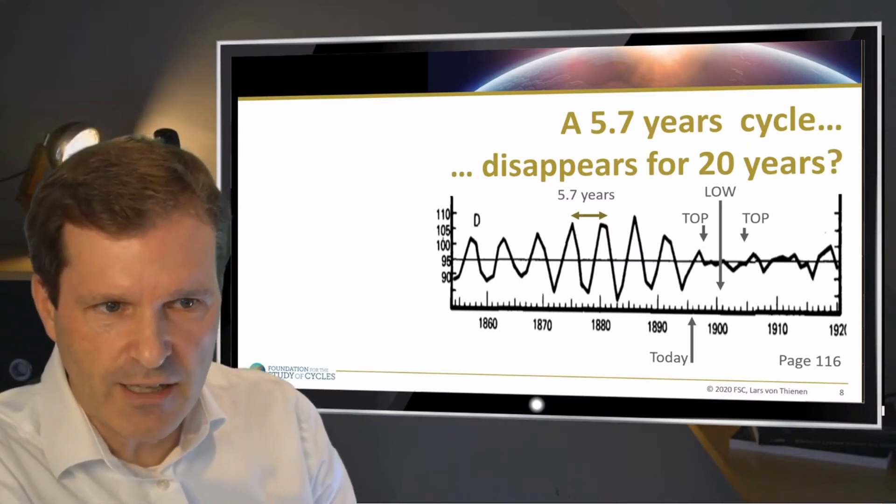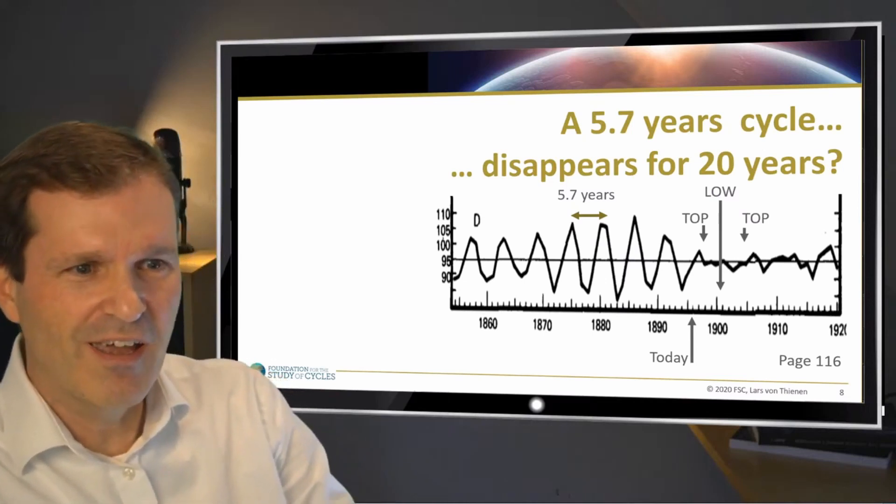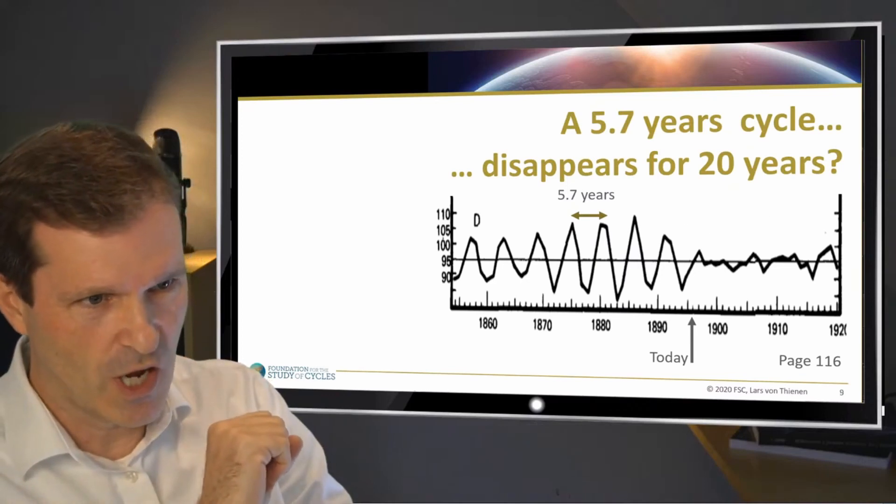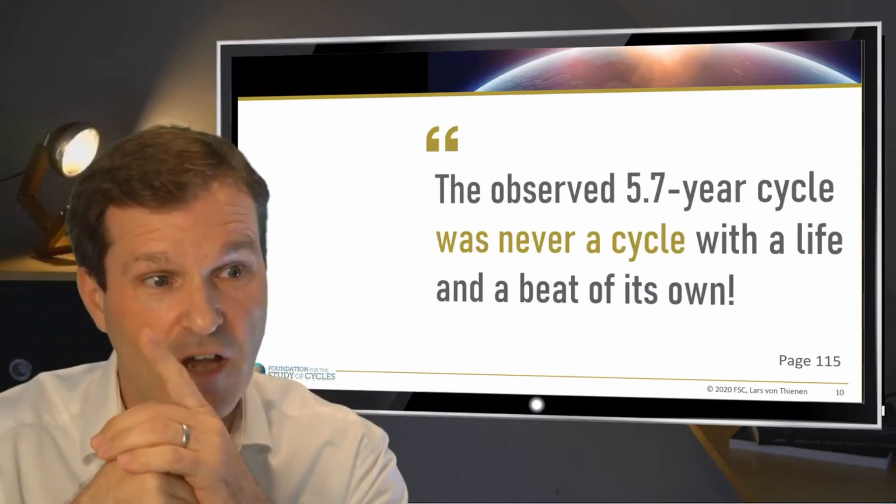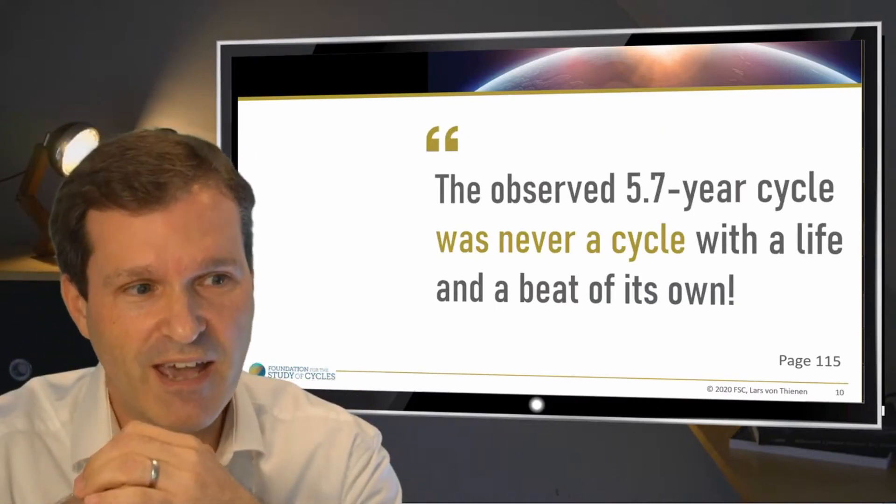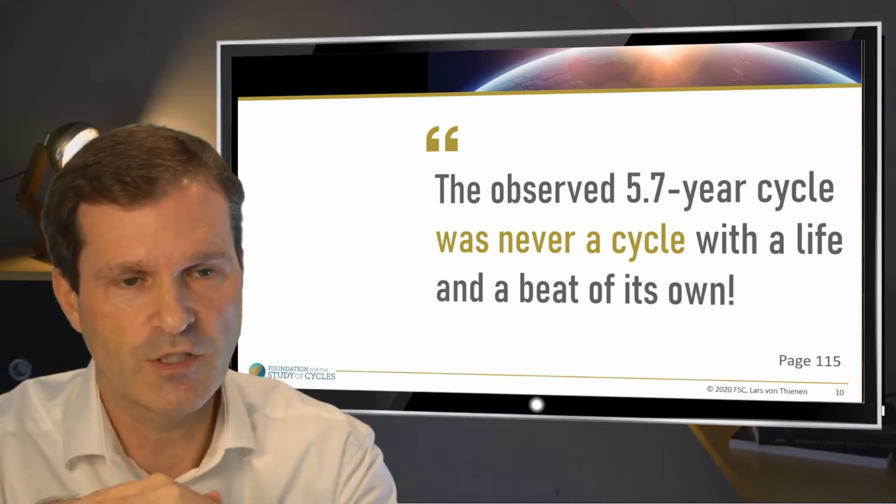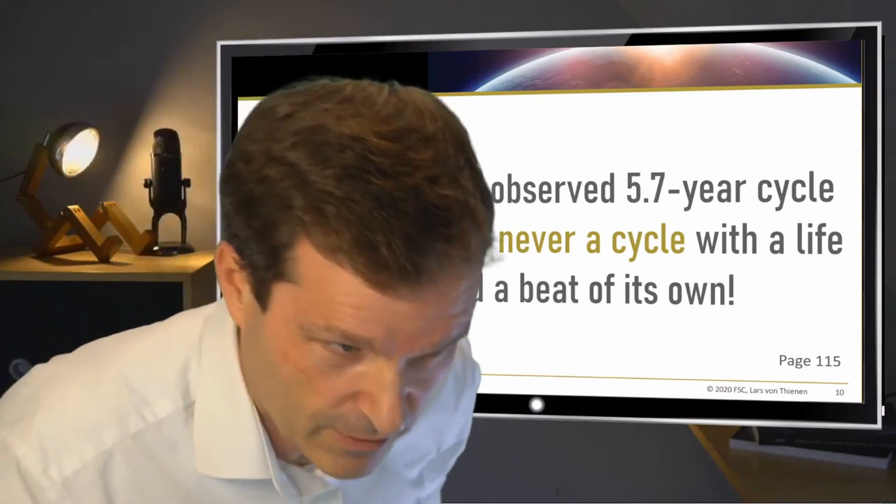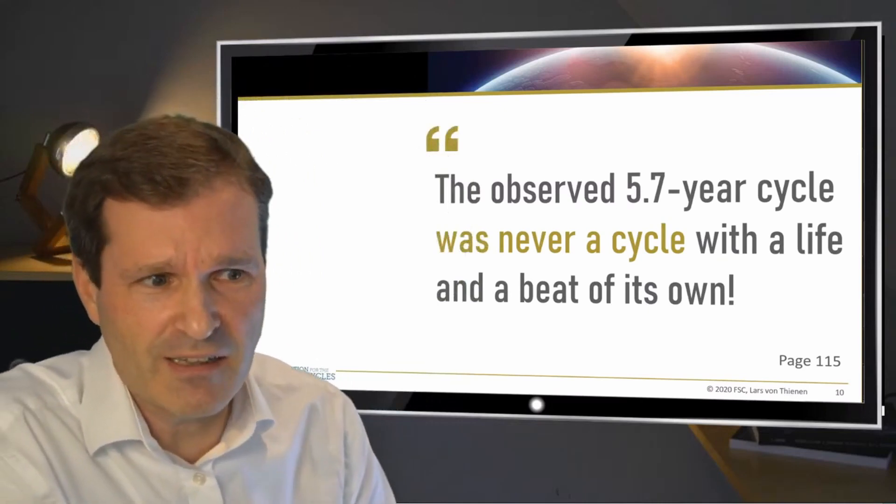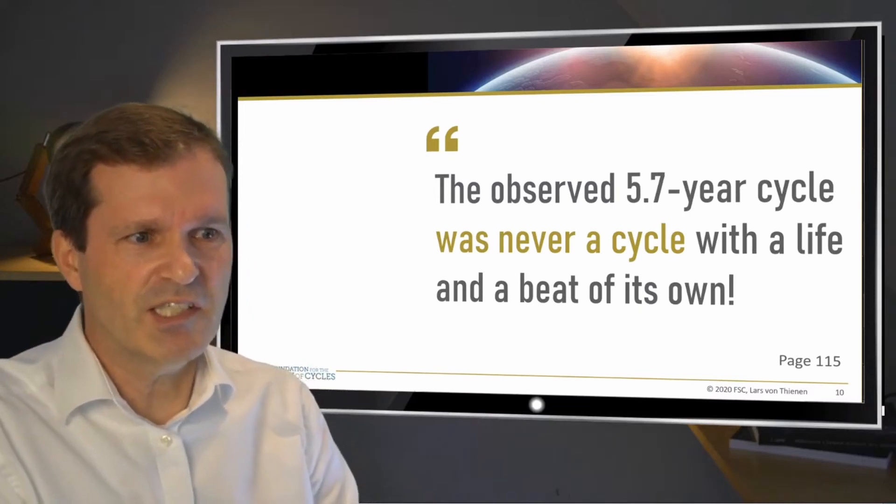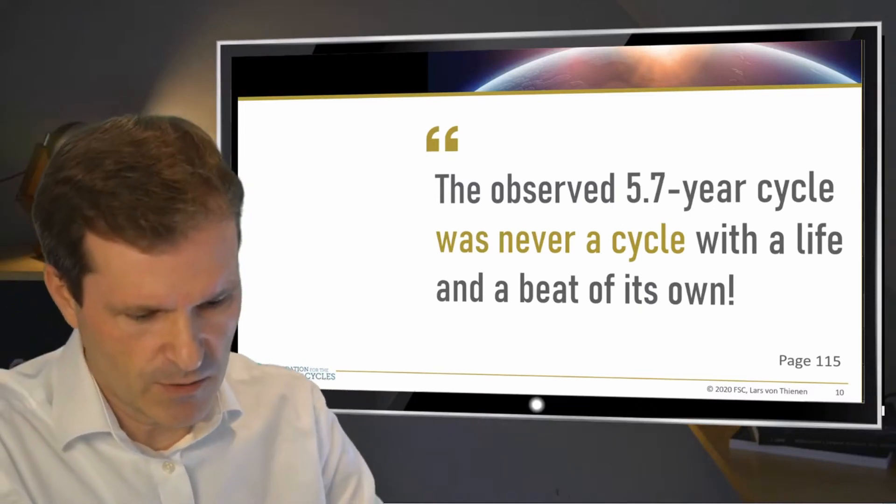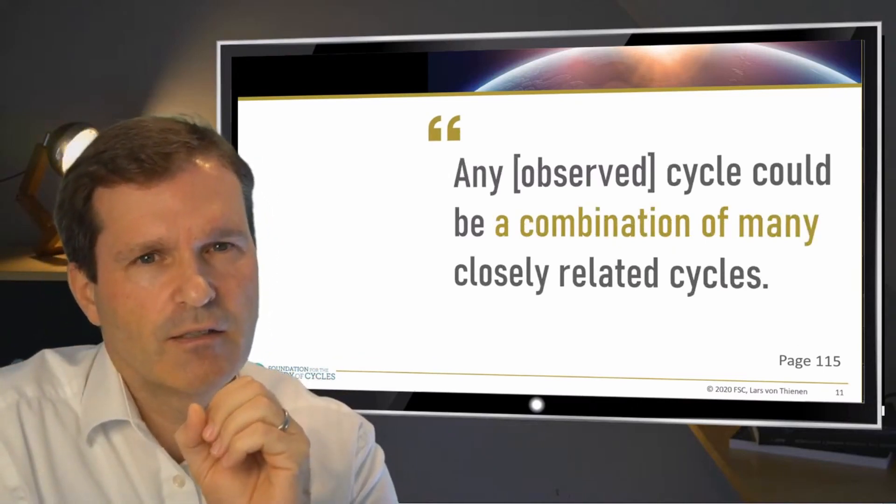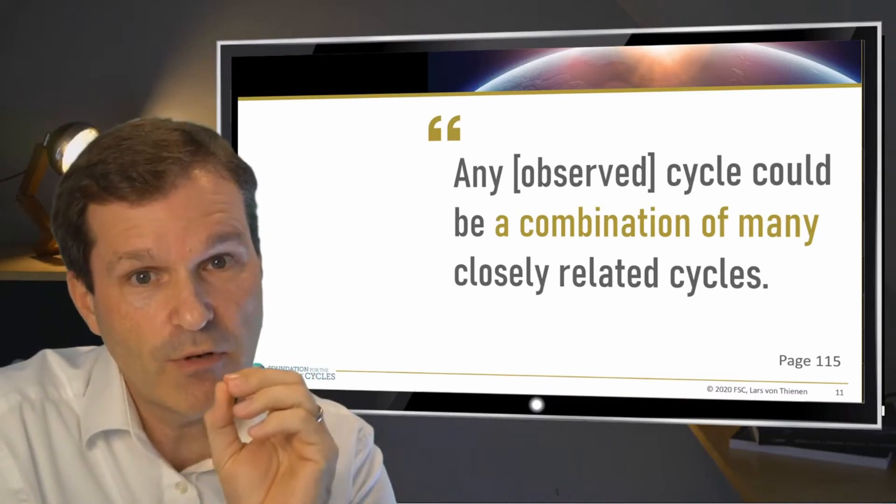What happened here? We clearly saw the cycle of 5.7 years. And that's now the risk of just visually thinking about using this kind of data set and measuring these cycles. The observed 5.7-year cycle was never a cycle with a life and beat of its own. So this is Dewey's finding, and this is valid for today. This is really important. You get the background out of it. So why was it never a cycle?